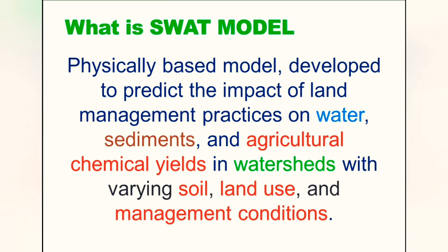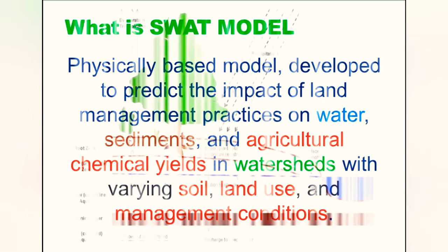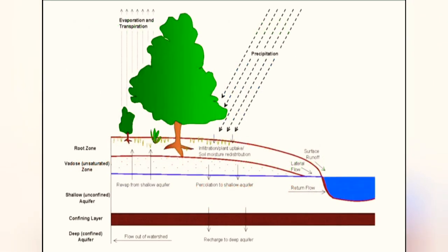SWAT is a hydrological model that predicts the long-term impact of land management practices on water, sediment, and agricultural chemical yield in watersheds. In a watershed there are variations of soil type and land uses, for example agriculture and settlement, and SWAT model helps in predicting long-term impact on those management conditions.